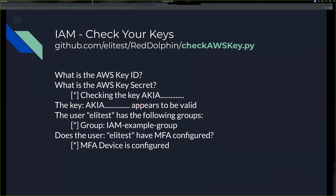One of the first and most useful scripts ties into IAM and is used for checking your keys - it's called check_aws_key. It tells you whether the keys are valid, which matters because sometimes you get API keys that have already been rotated six months or two years ago. It also tells you other information like what groups the member is part of and whether they have MFA configured.